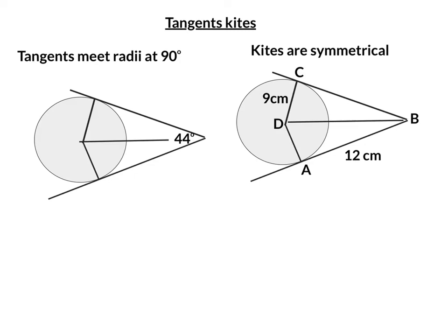In this video we're going to look at tangent kites. So here's a tangent kite here, with a radius down here and another radius here, and then this tangent and this tangent. Two things to remember: one is that tangents meet radii at 90 degrees, and that kites are symmetrical. So let's have a look at this first one here.